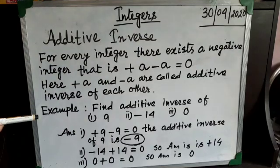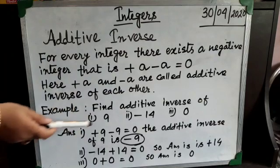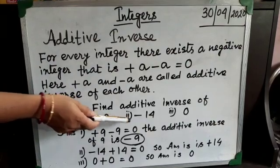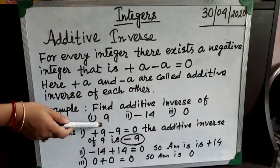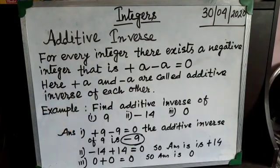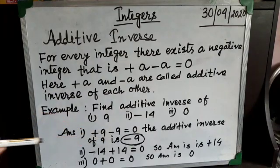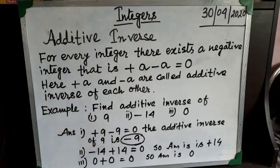I have shown you here a few examples. You have to find out the additive inverse of 9 in question number 1, question number 2 is minus 14, and question number 3 is 0. So first of all, what is the additive inverse of 9? If we add minus 9 with it, the total result becomes zero. So the additive inverse of 9 is minus 9.